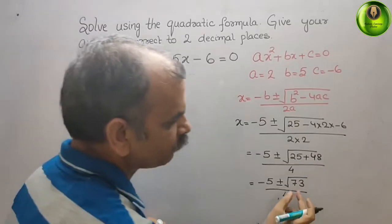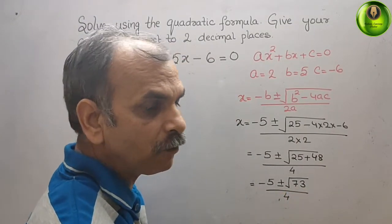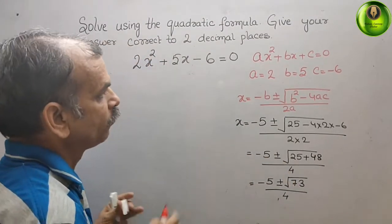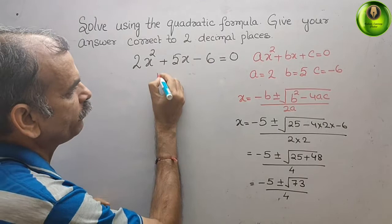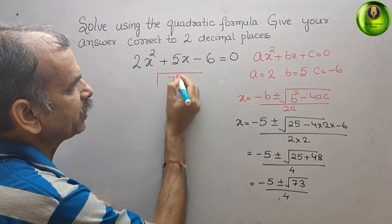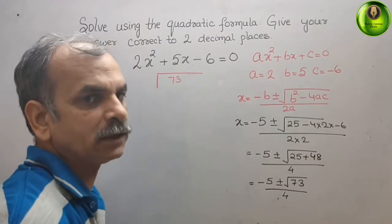So now we will find out the value of 73. What we have to do for long division method? 73. What is the perfect square before 73?